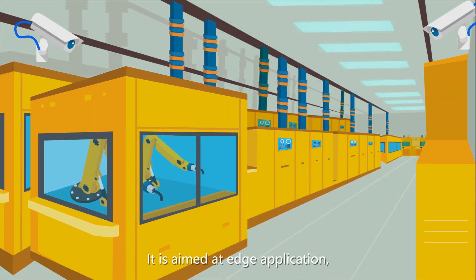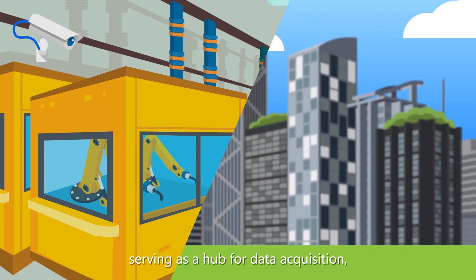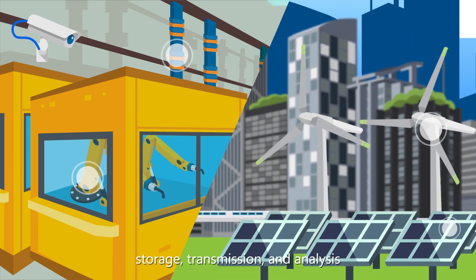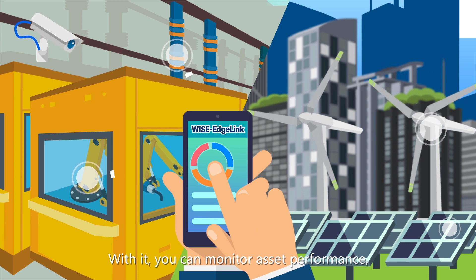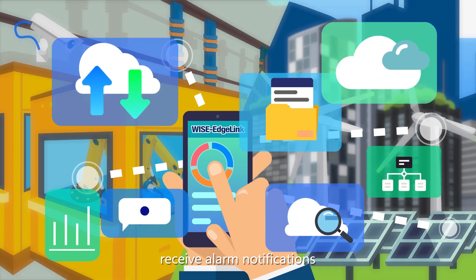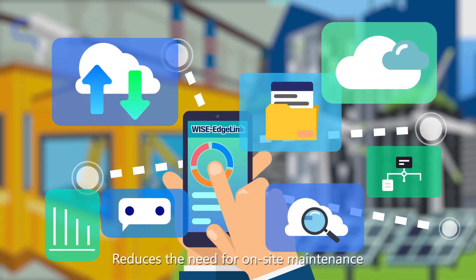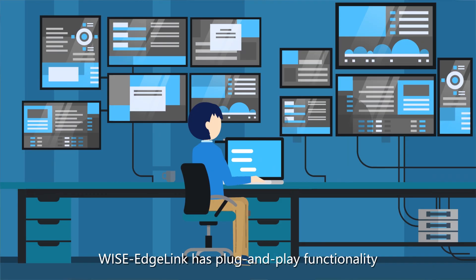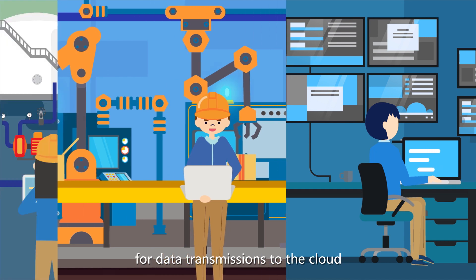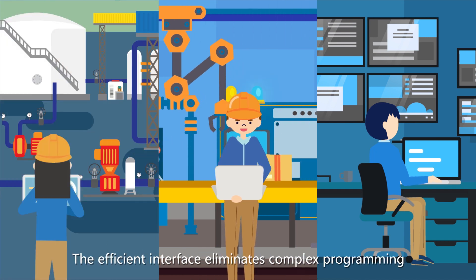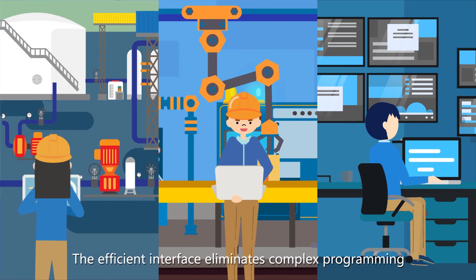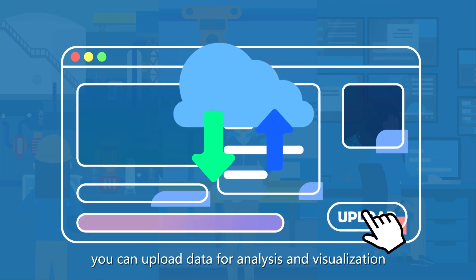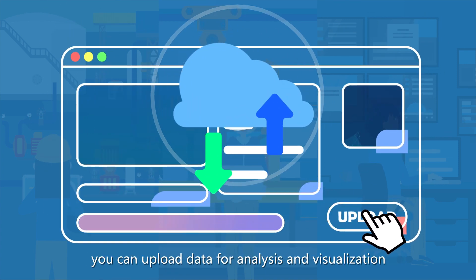It is aimed at edge applications, serving as a hub for data acquisition, storage, transmission, and analysis. With it, you can monitor asset performance, receive alarm notifications, and reduce the need for on-site maintenance. Wyse EdgeLink has plug-and-play functionality for data transmission to the cloud. The efficient interface eliminates complex programming and configuration. With just a few clicks, you can upload data for analysis and visualization.